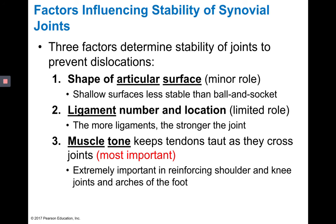Our next topic is going to be factors that influence the stability of synovial joints. Make sure you review both the structural and functional classifications of joints — the terms synarthrotic, amphiarthrotic, and diarthrotic as functional classifications, and how those apply to the structural classifications of fibrous, cartilaginous, and synovial joints. Review that before watching the next video.